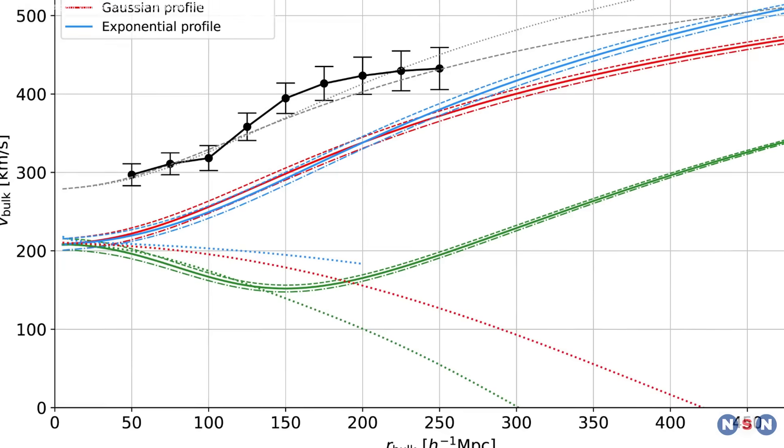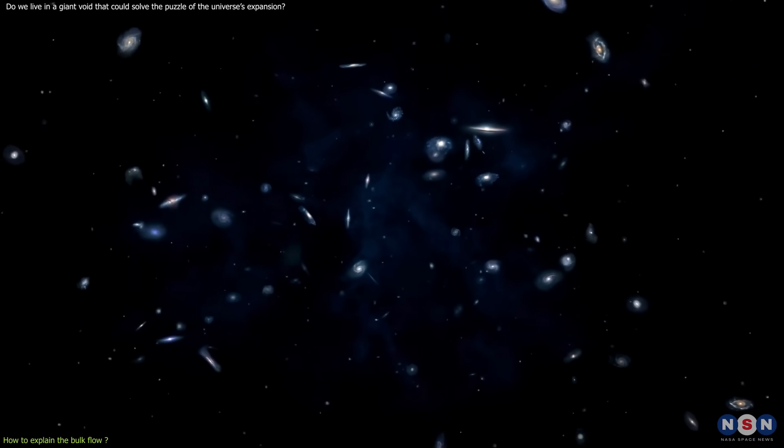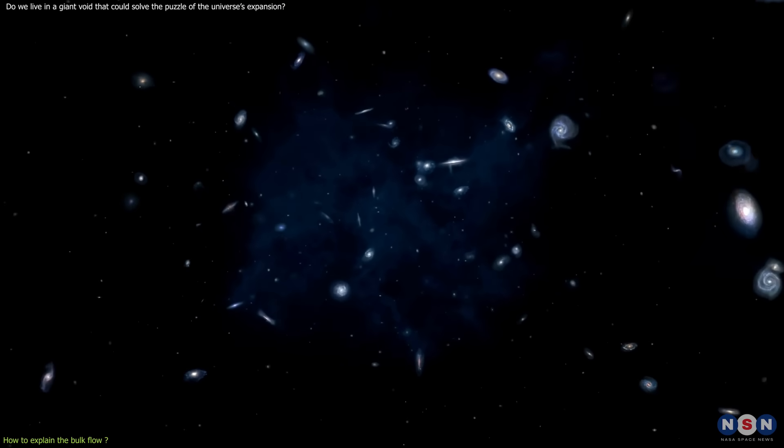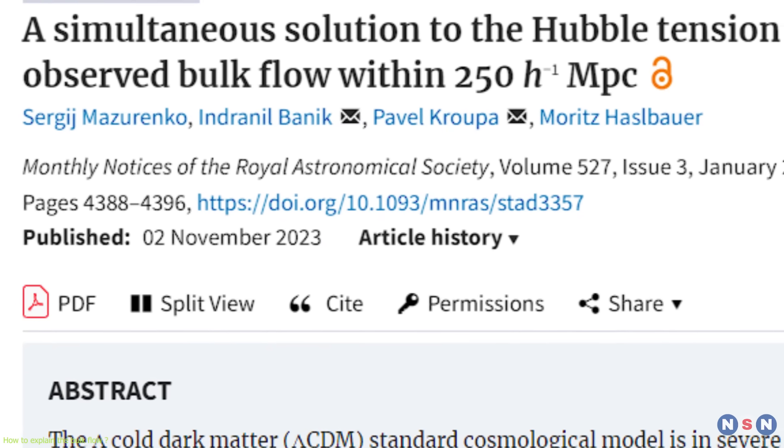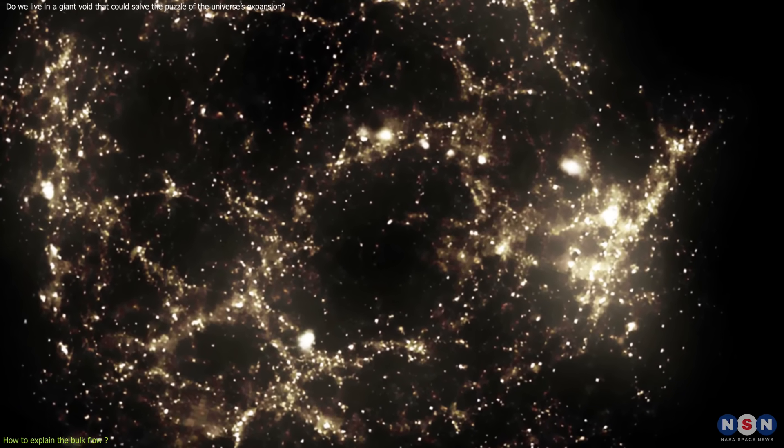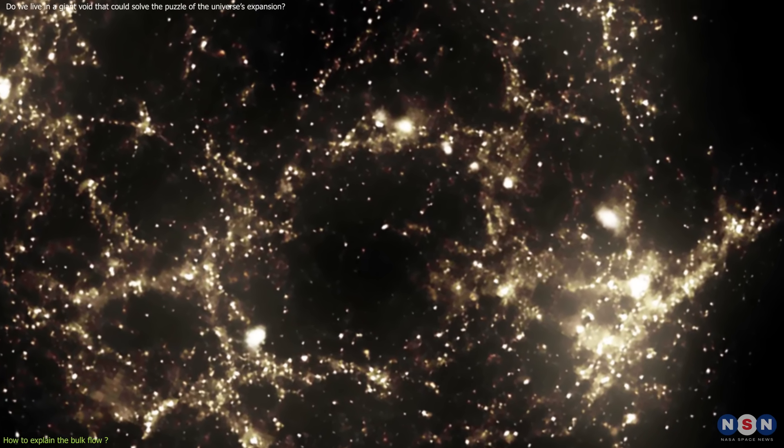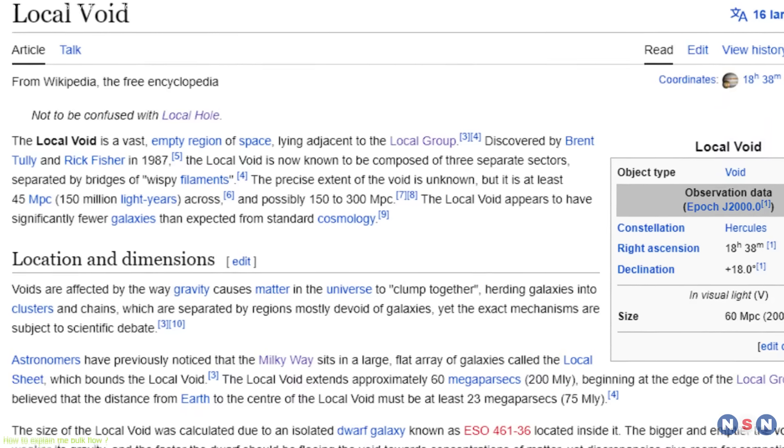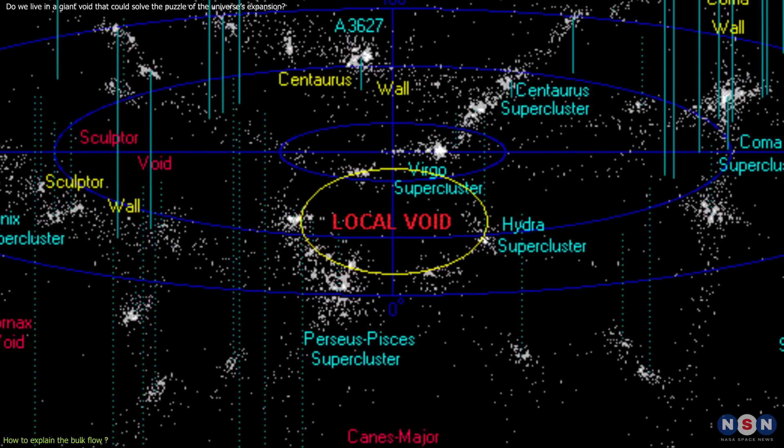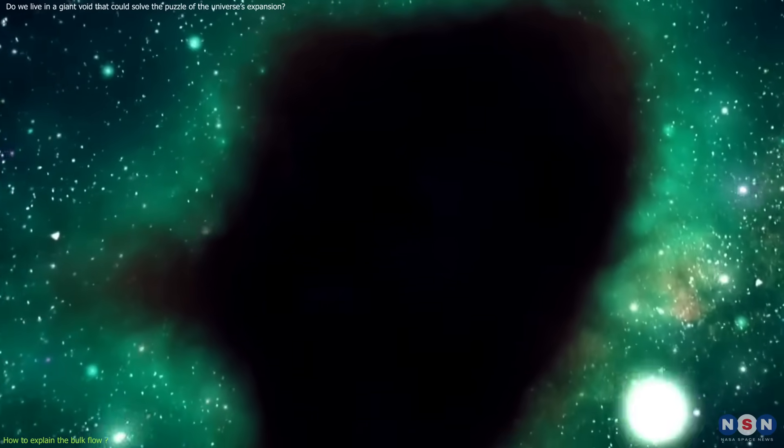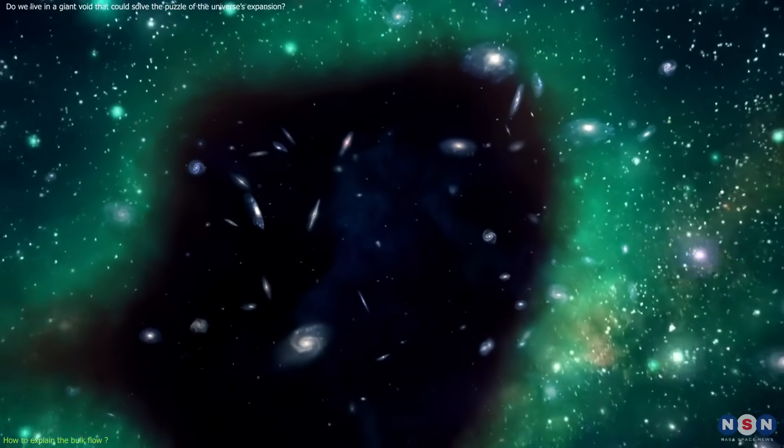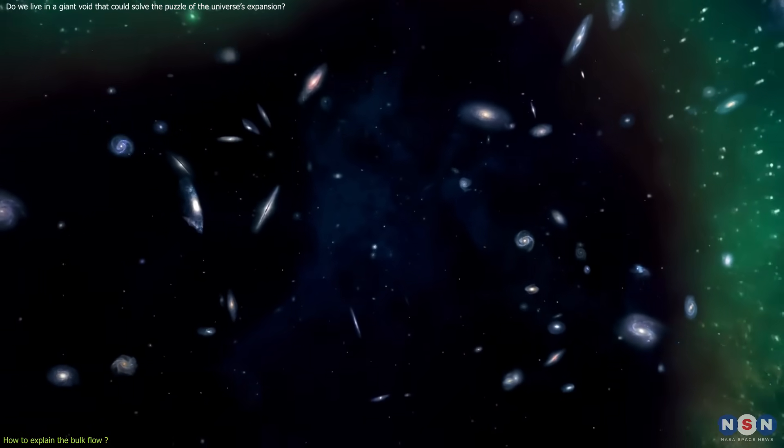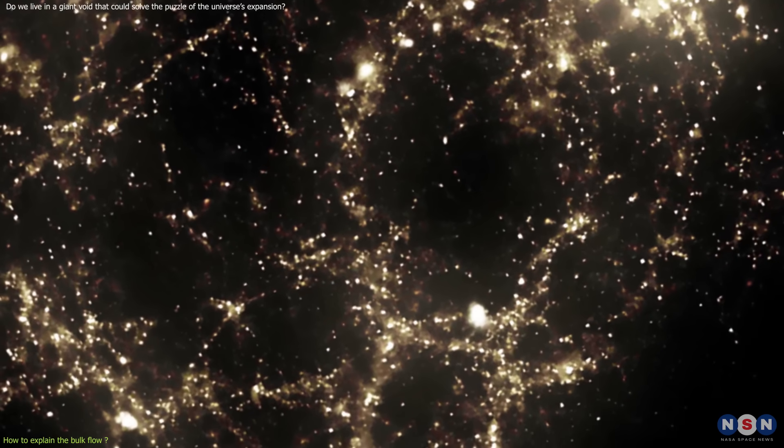But what causes the bulk flow? Why are the galaxies in the nearby universe moving in the same direction and at the same speed? Well, the authors of the paper proposed a simple and elegant explanation. Maybe we live in a giant void, a region of space that is less dense than the average. This void is called the local void, and it is one of the largest structures in the nearby universe, spanning about 150 megaparsec in diameter. It is located in the opposite direction of the bulk flow, which means that the galaxies in the bulk flow are moving away from the local void due to the gravitational pull of the surrounding denser regions.